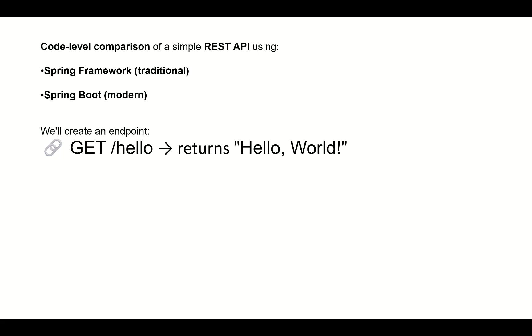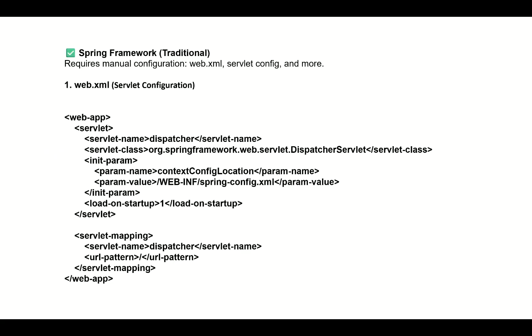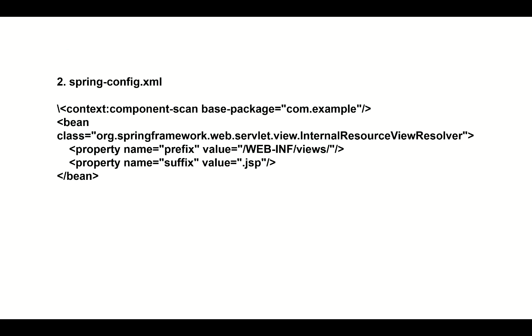Now we will compare a simple REST API — a GET endpoint at /hello that returns 'Hello World' — in Spring Framework versus Spring Boot. In traditional Spring Framework, manual configuration is required in web.xml: you define the dispatcher servlet as org.springframework.web.servlet.DispatcherServlet, define the path to springconfig.xml, set load-on-startup to 1, and configure the servlet mapping with the dispatcher URL pattern.